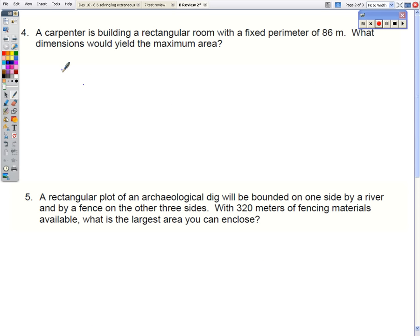Okay, on to number 4. If we have a rectangular room with a perimeter of 86, that's 2x plus 2y equals 86. And we want to maximize the area. So that's x times y.